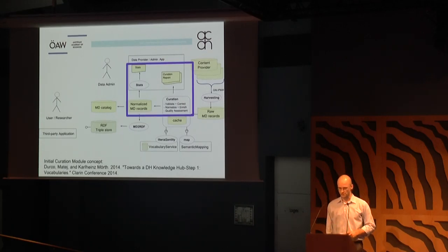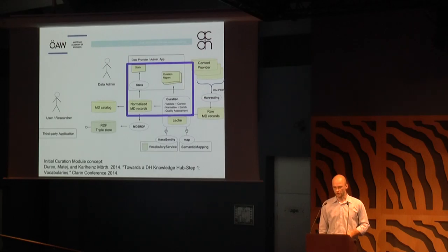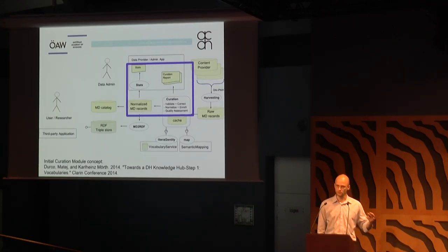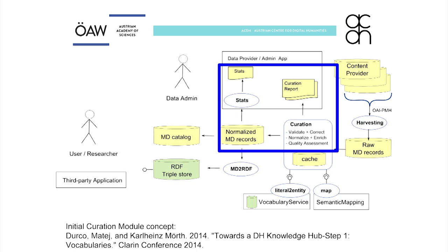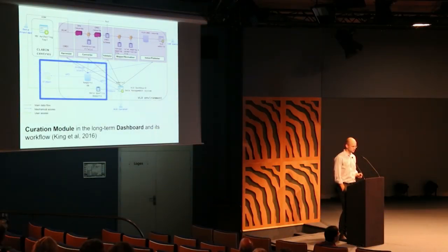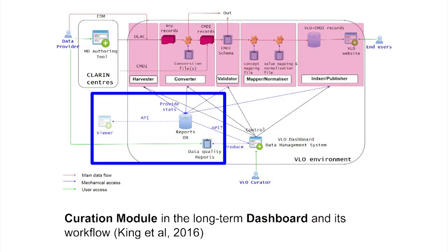This ties in to our previous work. Two years ago we talked about a curation box that should be part of the pipeline from harvesting metadata to getting them into the metadata catalog, with validation and quality checking in between, using vocabulary services and semantic mapping based on concepts — and informing data providers about quality through curation reports. Last year there was a similar idea of a VLO dashboard to gather information from harvesting, validation, and normalization into one application.